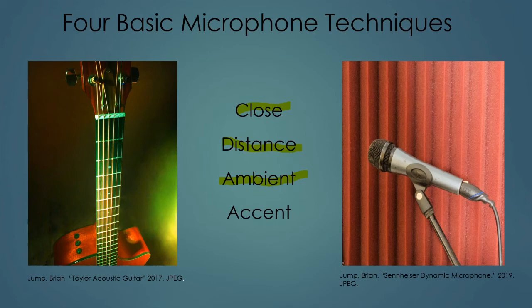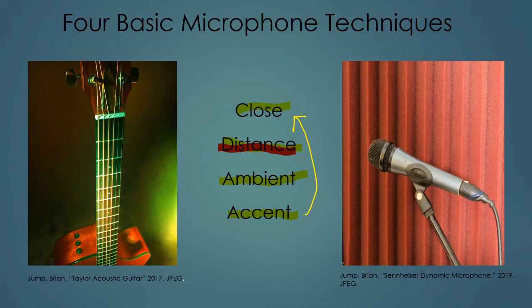Ambient micing is basically a hyper form of distance micing — you're at such a distance that you stop hearing the instruments themselves and start hearing the instruments interacting with the space. The last type is called accent micing, a specialized form of close micing in the context of distance micing. If you have a jazz band miked at a distance and it comes time for the soloist to stand out, that person steps up to the accent microphone and blows their horn or sings right in, soaring above the sound of the band. So the four techniques are: close, distance, ambient, and accent. Close micing is definitely the most common of the four.